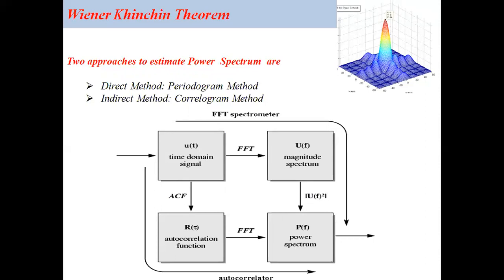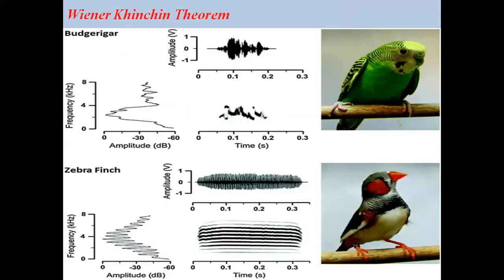In the case where the signal does not satisfy the required conditions, you cannot directly apply Fourier transform. In such a case, you have to use the indirect method, which is called the correlogram method. This is what the Wiener-Kinchin theorem addresses: if you have a time domain signal u(t) which does not satisfy those conditions, you calculate the autocorrelation function for it, and then take the Fourier transform of that autocorrelation, which gives the power spectrum. This indirect method of estimating the power spectrum is also called the correlogram method.